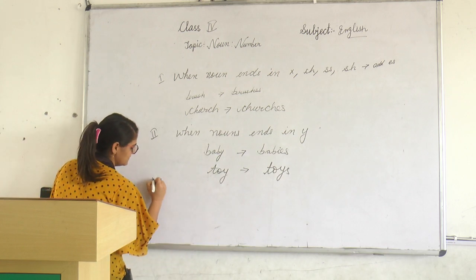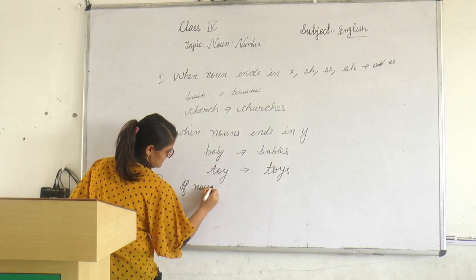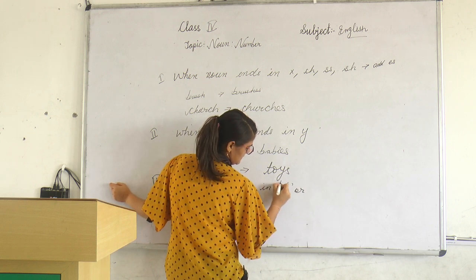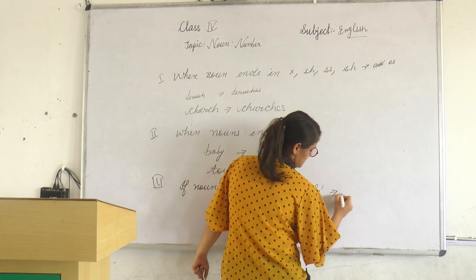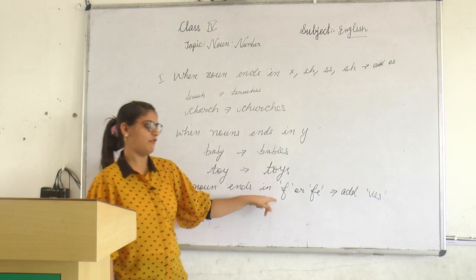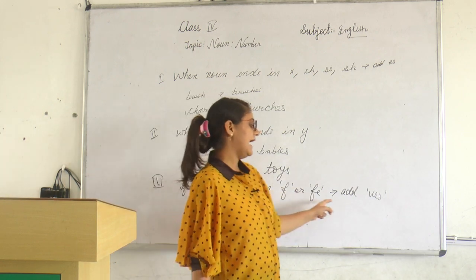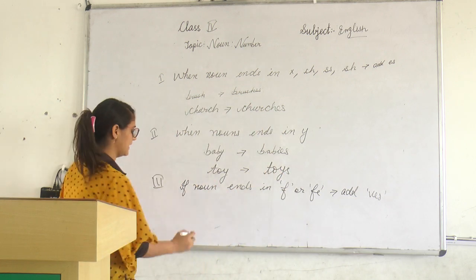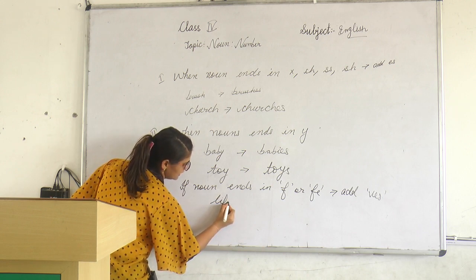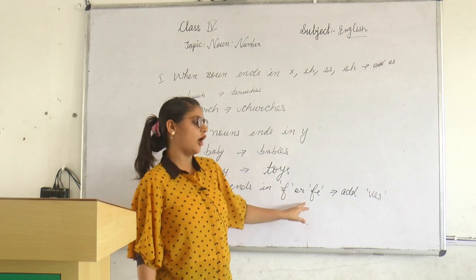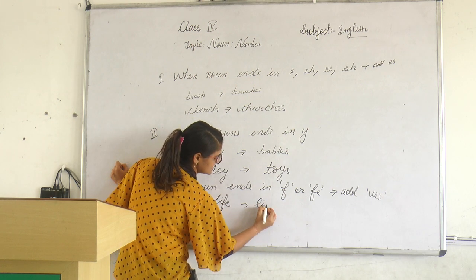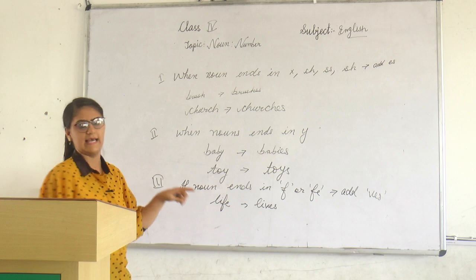The next rule is: if the noun ends in F or FE, then we add VES in place of F or FE. For example, life — this noun ends in FE — so to make it plural we add VES, giving us L-I-V-E-S, lives.